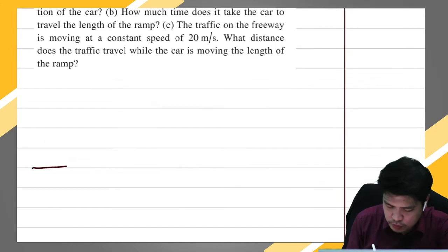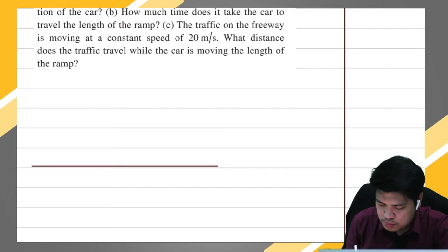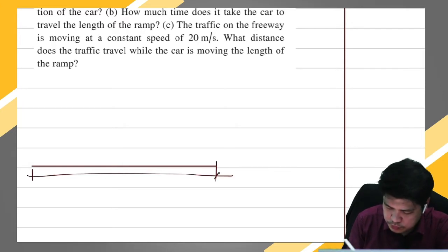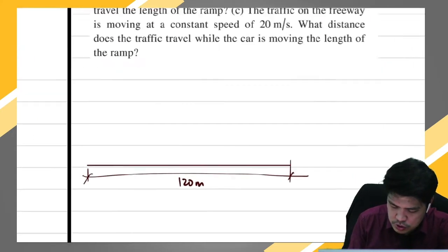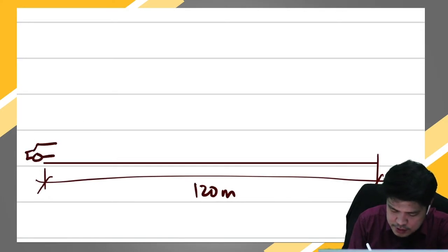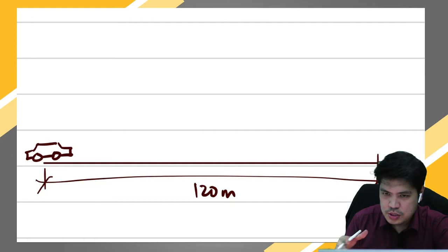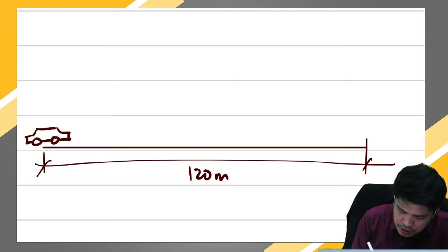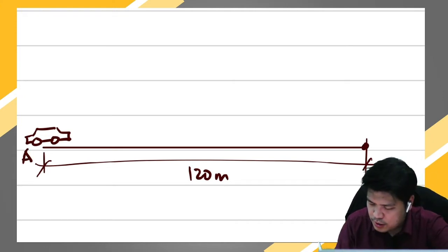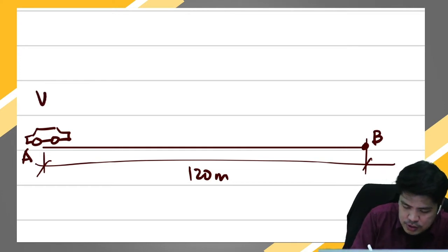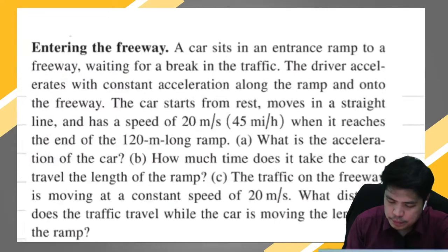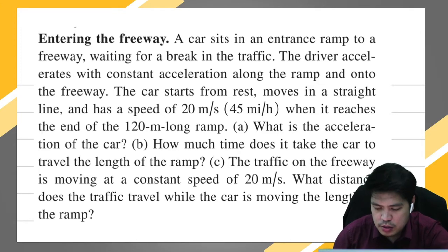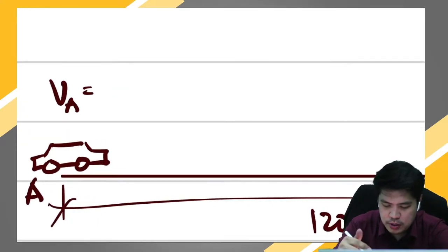Now let's try to answer the next problem. Imagine this is the total length of the ramp — 120 meters long. The car started from here at rest, waiting for traffic to clear, then accelerated. Let's call this end of the ramp point A and the other end point B. At point A, interpreting the problem, the car starts from rest, so the velocity at A is zero.